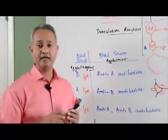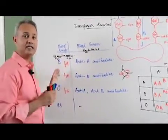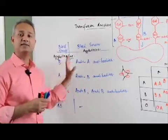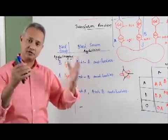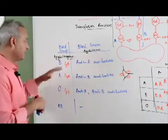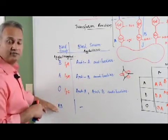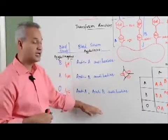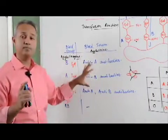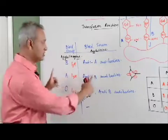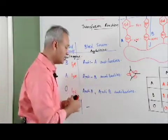Aglutinogens and agglutinins. Instead of saying antigen and antibody, these are the special names that are used in case of the blood transfusion topic. Now we understand what is on the surface of the blood cells and we understand what is in the serum. Now let us talk about how the blood typing is done.